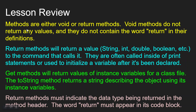Let's take care of our lesson review. Methods are either void or return methods. Void methods do not return any values and do not contain the word 'return' in their definitions. Return methods return a value — a String, double, int, boolean, or whatever — to the command that calls them; they are often called inside print statements or used to initialize a variable. Get methods (accessors) return the values of instance variables. The 'toString' method returns a string describing the object using its instance variables. Return methods must indicate the data type in the method header, and the word 'return' must appear inside the code block.